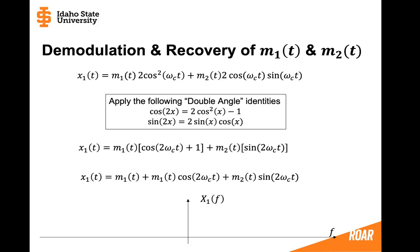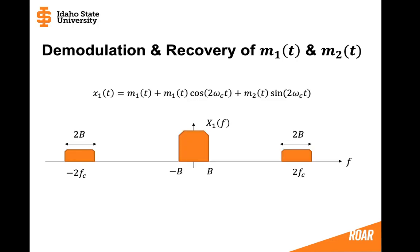and the message 1 and message 2 that are being multiplied by the cosine and sine waves are going to be at frequencies of 2 fc. So this is probably going to look something like this where we have a signal X1